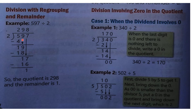So 5 minus 4 is 1 and 9 comes down, making 19. 2×9=18, so 19 minus 18 is 1. Then bring down 7. 2×8=16, so 17 minus 16 is 1. The remainder is also there. The quotient is 298 and the remainder is 1.